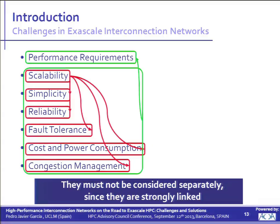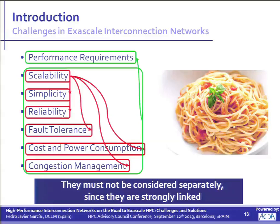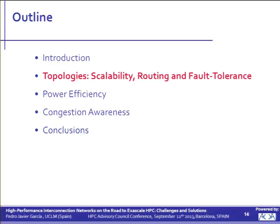This overall challenge can be divided into particular challenges regarding any aspect of interconnection networks: scalability, simplicity, reliability, fault tolerance, cost and power consumption using power-saving techniques, and also congestion management. All of these particular challenges affecting all aspects in the design of interconnection networks should be coupled — like the ingredients in a spaghetti dish. Topology is one of the obvious characteristics of the network that should be rightly addressed when talking about Exascale systems.